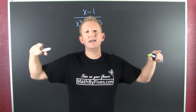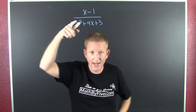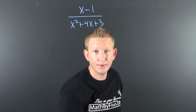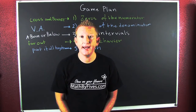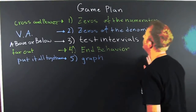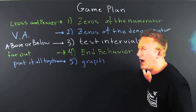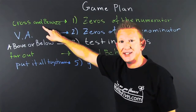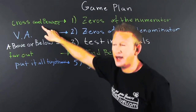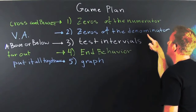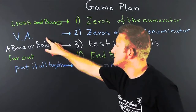Let's go over the game plan. First, we want to get the zeros of the numerator — that's where the graph of your rational expression is going to cross or bounce the x-axis. Then you're going to get the zeros of the denominator, because the zeros of the denominator are your vertical asymptotes.